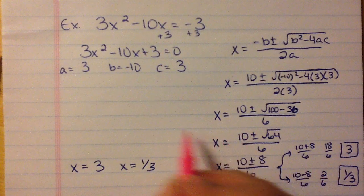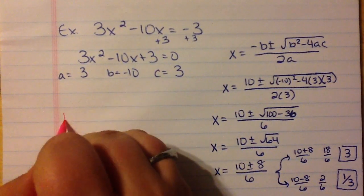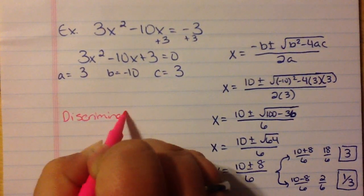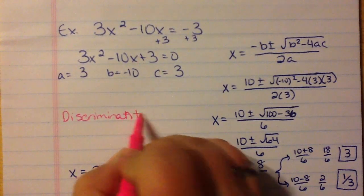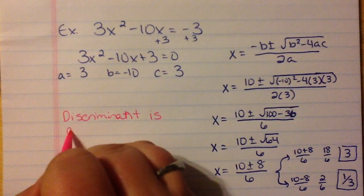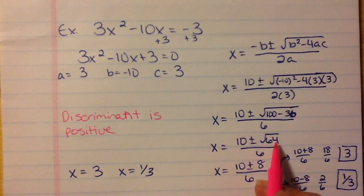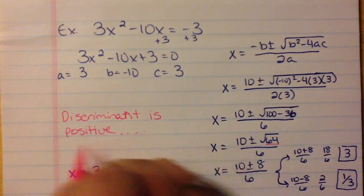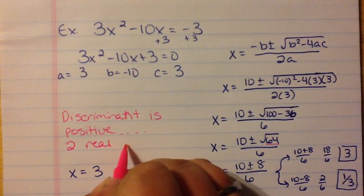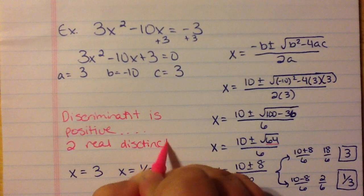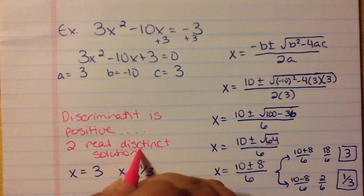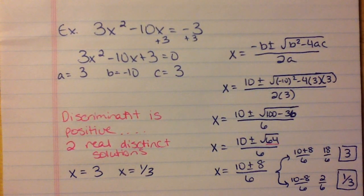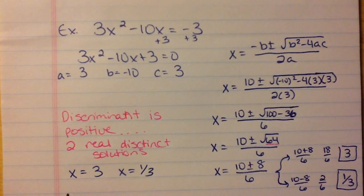I also want to talk about the discriminant here. Remember, that's the expression under the square root. When your discriminant is positive — ours was 64 — that means you will have two real, distinct solutions, meaning two real solutions that are different. So when your discriminant is positive, you're going to have two separate solutions. As soon as I got positive 64, I knew I'd have two answers, and the parabola would cross the x-axis two different times.